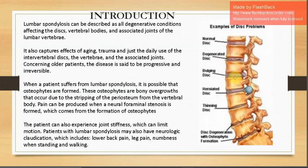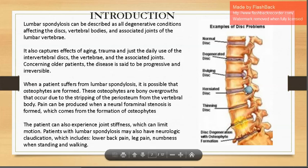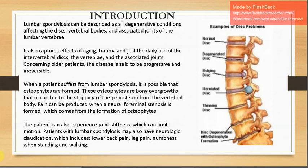Here you can see the vertebral column and its structures. A normal disc is shown, then a degenerated torn disc, a bulging disc where the nucleus pulposus has come out and is trying to compress structures, a thinning disc where due to degeneration and reduced water-imbibing capacity the disc has lost its height, and finally a disc that is thin with irregular vertebral body margins showing bony projections and spurs called osteophytes.